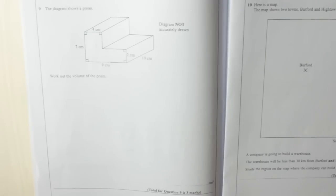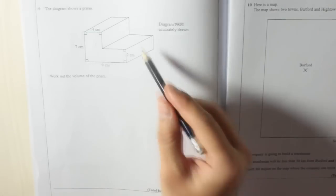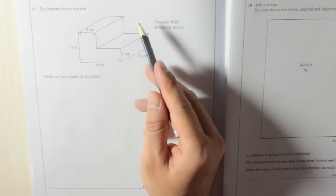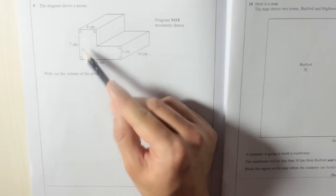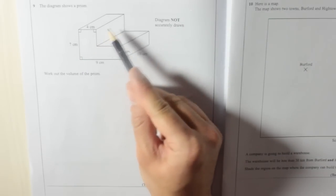Now remember, a prism is a shape, a 3D shape, that has the same cross section all the way through it. The cross section is this L shape. That L shape goes all the way through it.